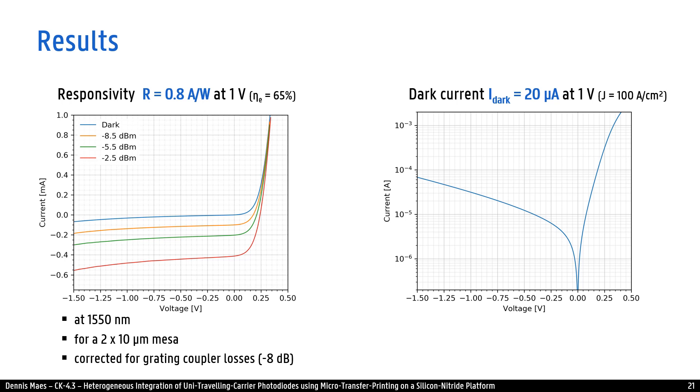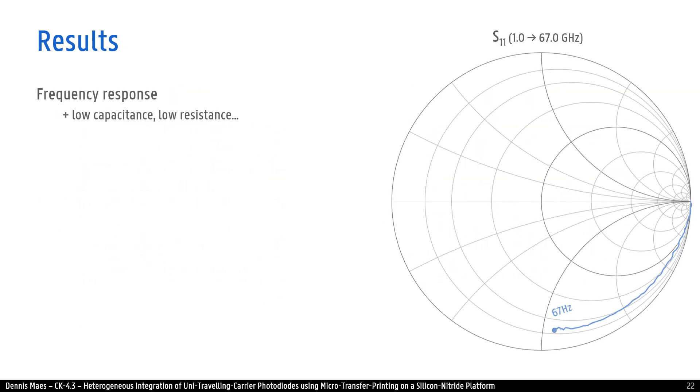Second result is a dark current, which is rather high for these small devices in the range of tens of microamps. Next is a frequency response. These photodiodes are characterized up to 67 GHz and show a clean RC response with both low capacitance and low resistance, promising a very high speed operation.